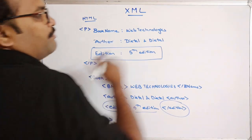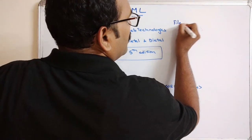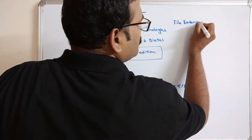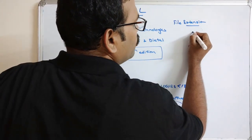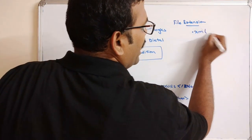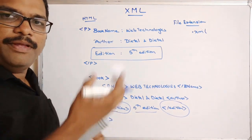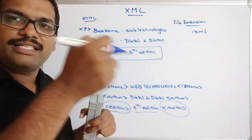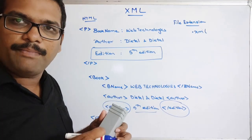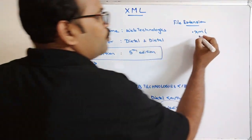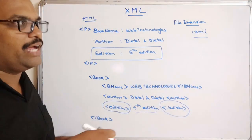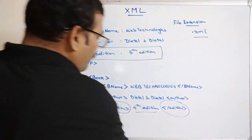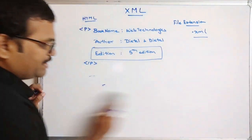The file extension for XML is .xml. Just as HTML files are saved with the .html extension, XML files should be saved with the .xml extension. Another important thing is the XML declaration.